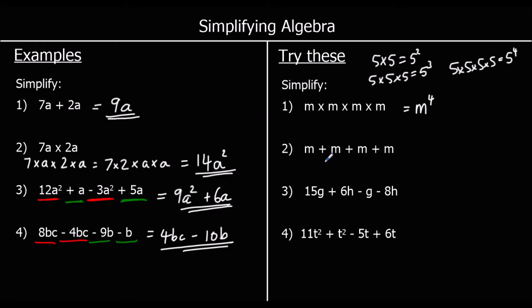The second one is M plus M plus M plus M. So again, if we had 5 plus 5 plus 5 plus 5, if we had 4 5's plus together, we can say that's the same as 4 times 5. So 4 M's added together is the same as 4 times M. And we don't write the times sign, so it's 4M.